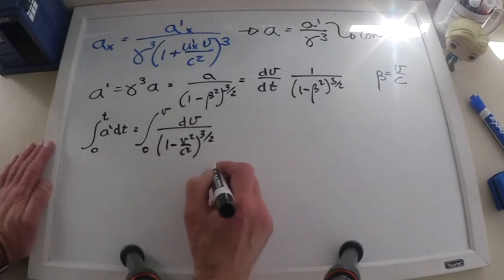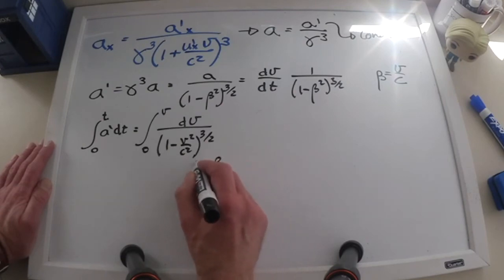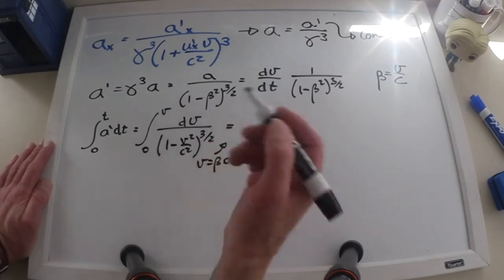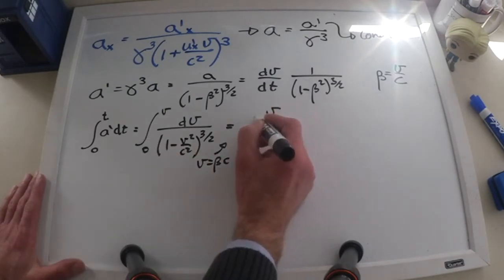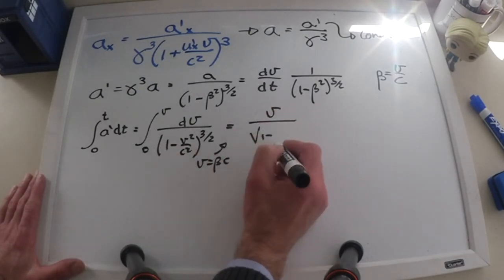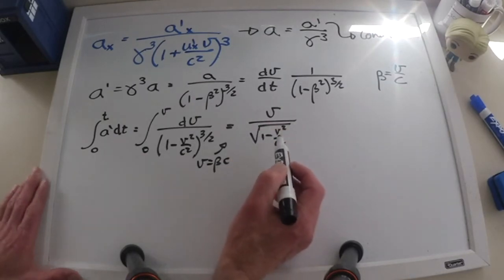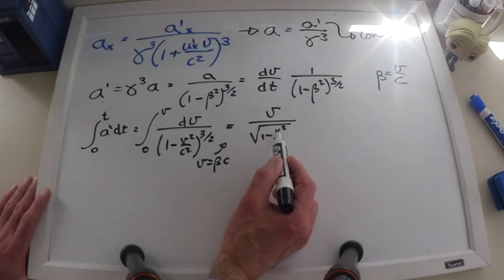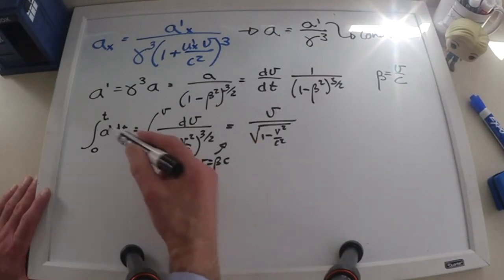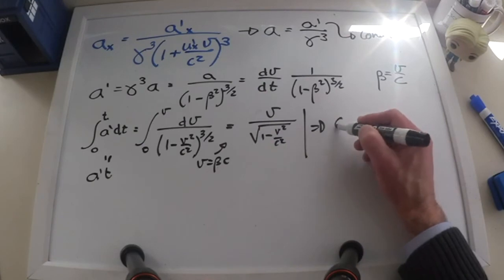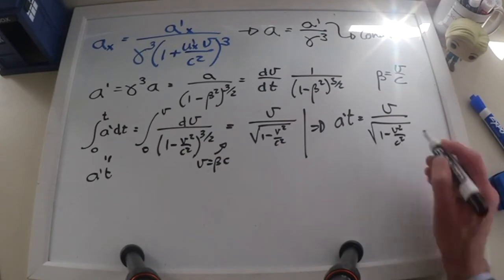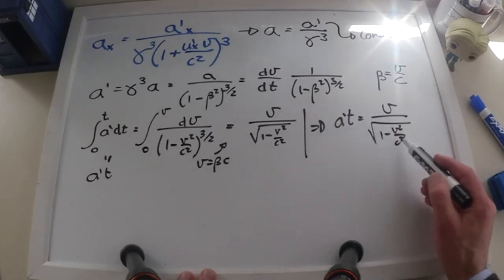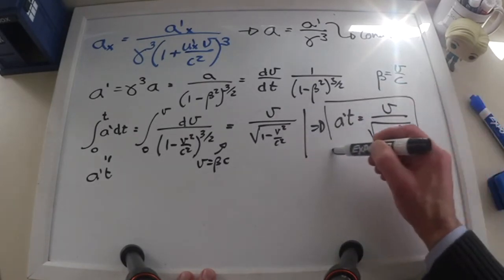This integral — you just look at the tables; you might want to do the change of variables v equals beta c. Look at the tables, and then the integral for this particular expression gives us the velocity over the square root of 1 minus v squared over c squared. Yes, this is gamma, but remember that this v here does depend on time. On the left hand side what I have is a prime t. Let me rewrite this as a prime t equals v over the square root of 1 minus v squared over c squared. What was I looking for? Well, I was looking for the velocity as a function of time, so I want to solve this expression for v.